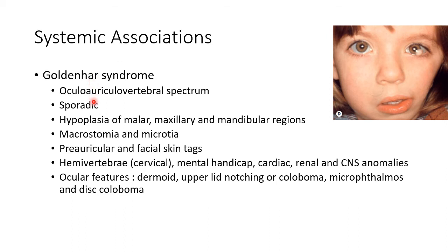The most common systemic association of limbal dermoid is Goldenhar syndrome, also called oculo-auriculo-vertebral spectrum. It is usually sporadic. Systemic features include hypoplasia of the malar, maxillary, and mandibular regions, macrostomia, microtia, pre-auricular and facial skin tags, cervical hemivertebrae, and mental handicap with cardiac, renal, and CNS anomalies.